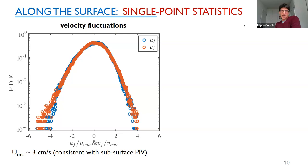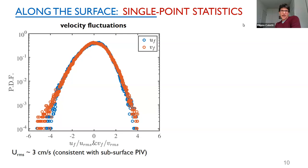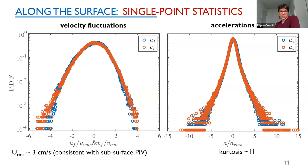The accelerations are very intermittent — an interesting first observation. If this were analogous to 2D turbulence, I would not expect such high intermittency for the accelerations; I should expect more Gaussian behavior. Instead, we find a kurtosis of about 11, characteristic of a highly turbulent flow. The level of isotropy is fairly good — I cannot really tell the difference between the streamwise and lateral components.